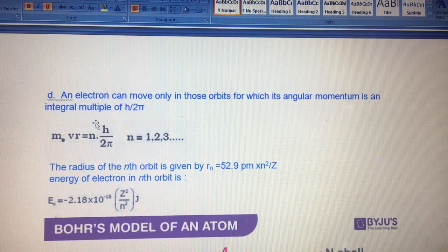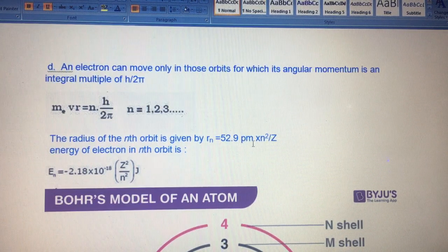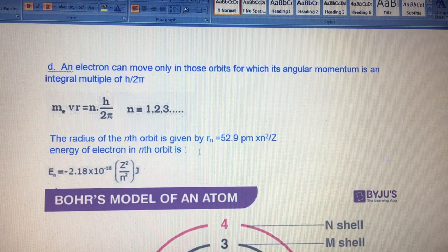Secondly, when an electron moves in those orbits for which its angular momentum is an integral multiple of h upon 2 pi. This means mvr equals n h upon 2 pi. When electrons move in orbits, mass remains constant but velocity changes at a particular angle. Angular momentum depends on which n it is in, meaning which shell. The formula mvr equals n h upon 2 pi. From this we can also calculate radius: 52.9 picometer times n square upon z.